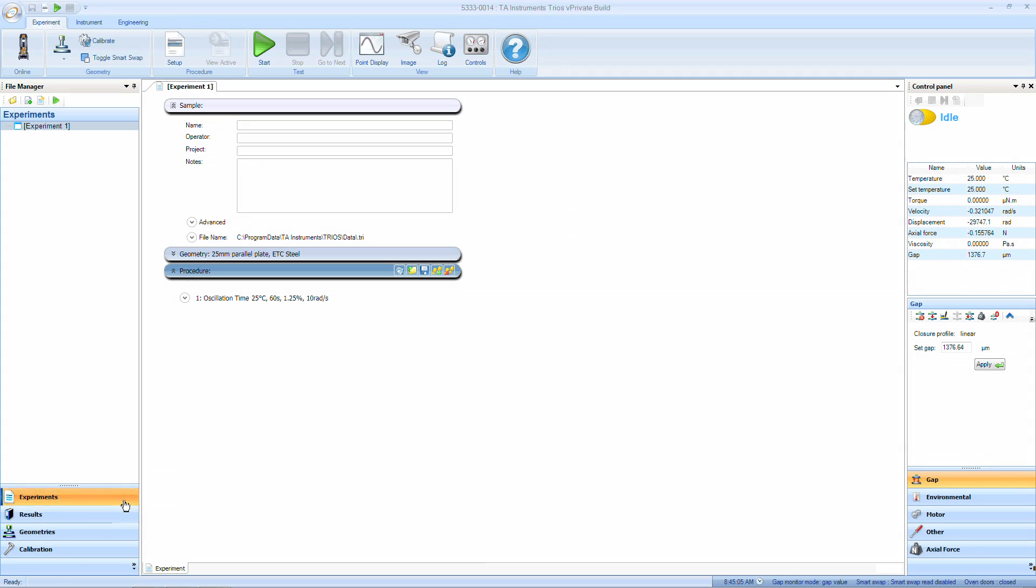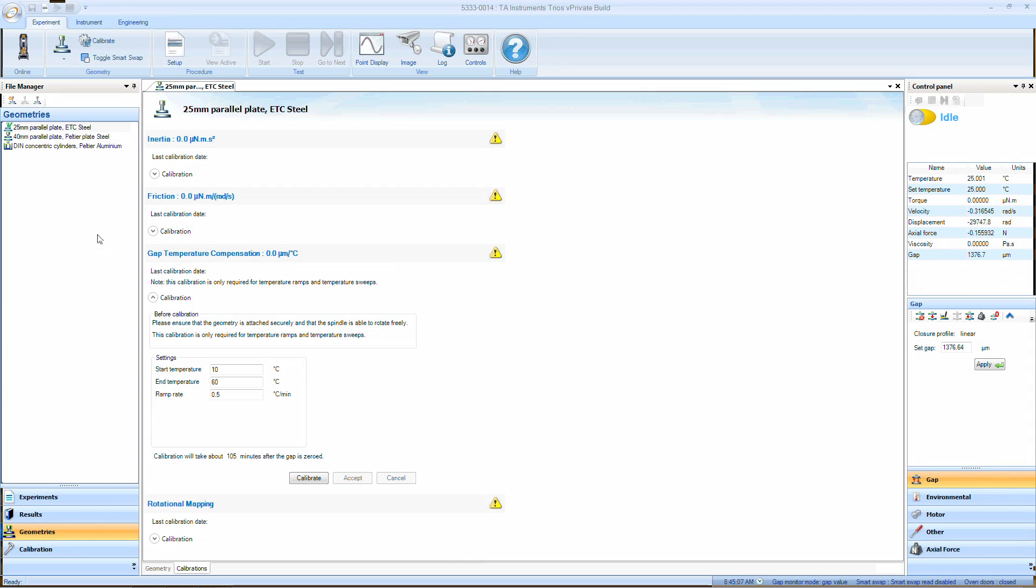To calibrate the gap temperature compensation, go to Geometry. Double click on the selected geometry and go to the Calibrations tab. Expand the gap temperature compensation calibration area. Select the temperature range and rate that exactly matches the test conditions, then click Calibrate. When complete, choose to accept or cancel the new value.